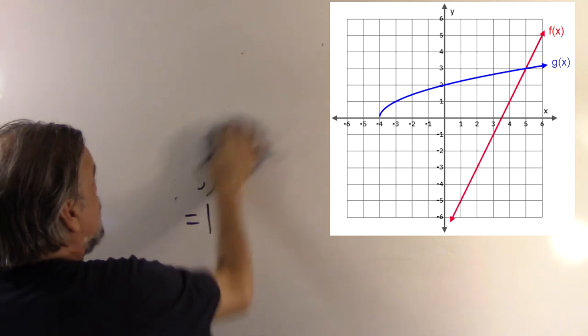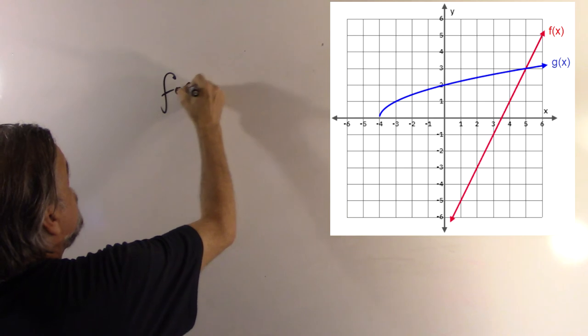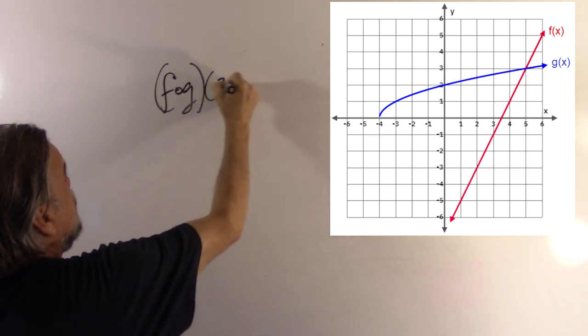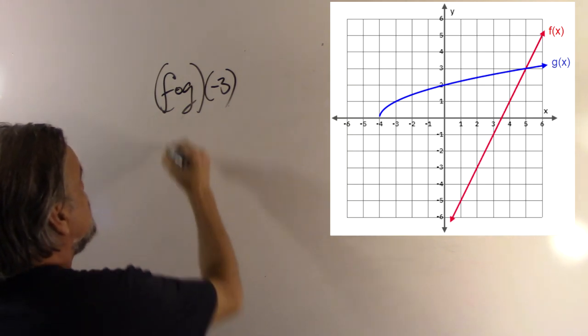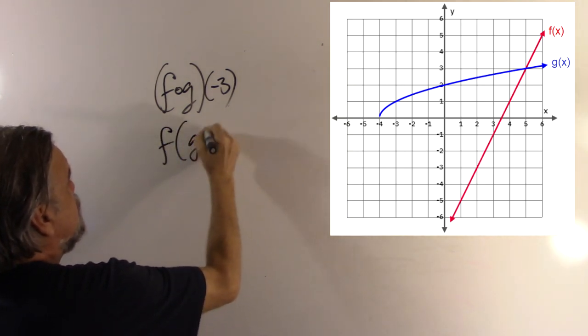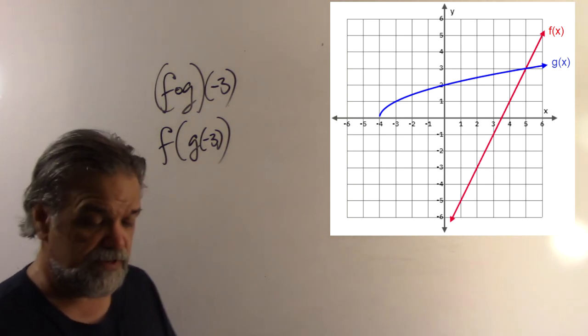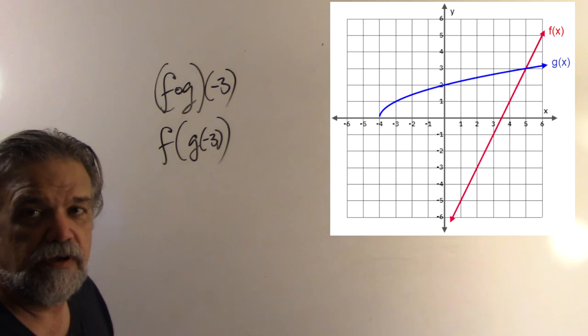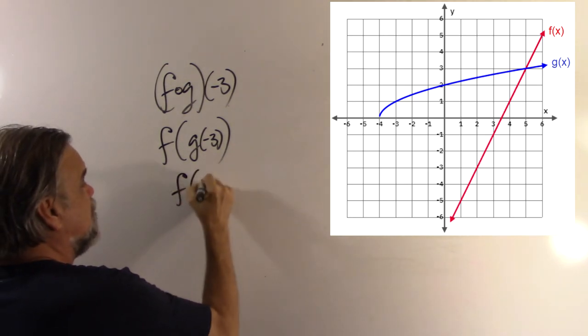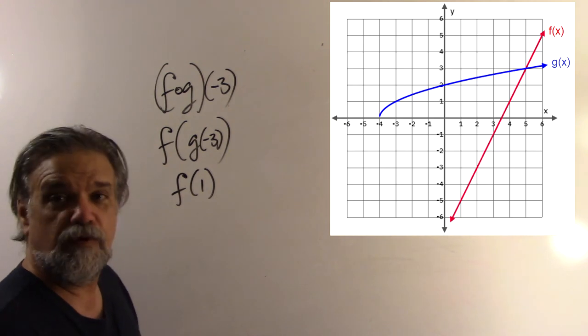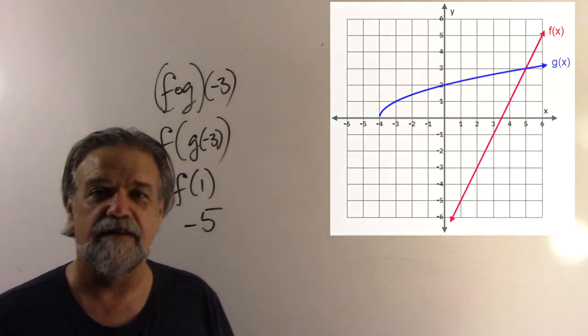And, of course, we can go the other way, too. We can say, well, what is f(g(-3))? So, we look at our g graph, and we say, when x is -3, what is y going to be? g(-3) is going to be 1. So, this is f(1). And f(1) turns out to be -5. I think you get the idea.